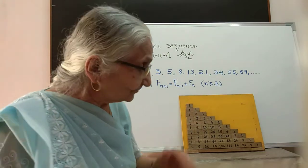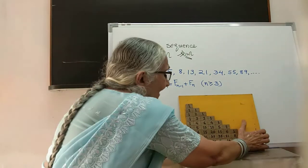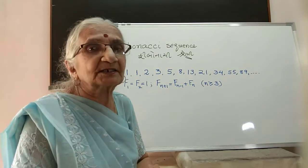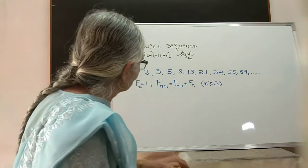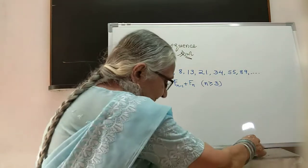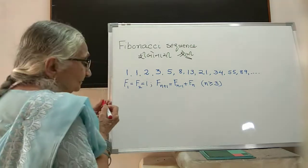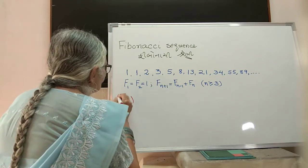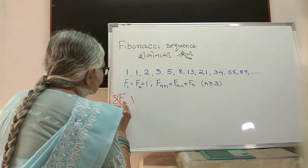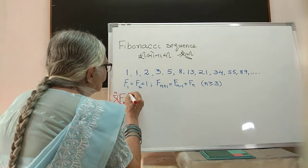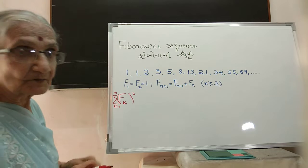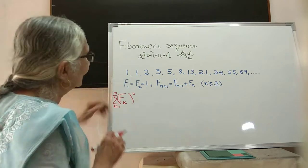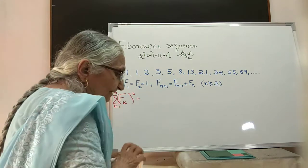That's one nice thing about this sequence. Now this sequence has many beautiful properties. We are going to take one with the help of models, and this property is—I first write it down: Σ(k=1 to n) F_k².